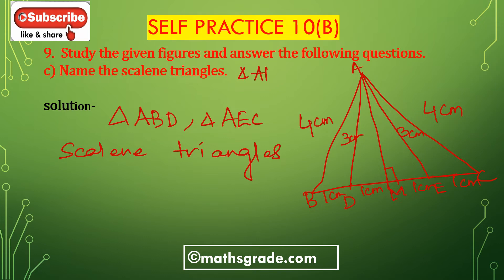Triangle ABD and triangle AEC — both triangles are scalene triangles because all three sides are different.